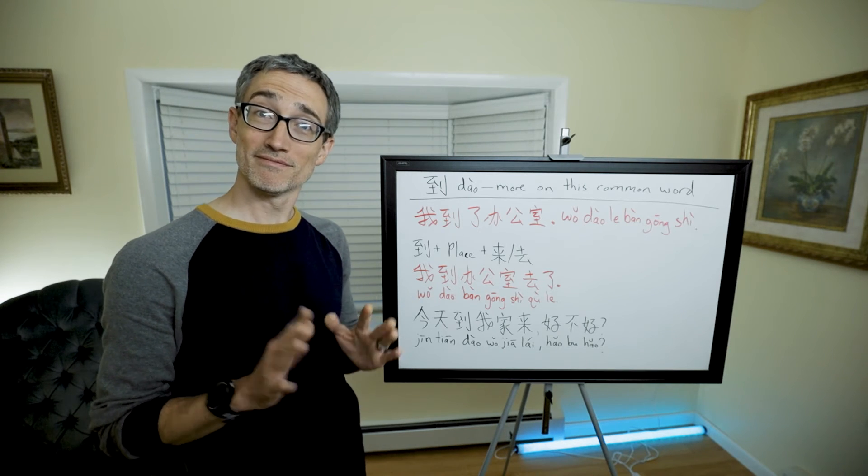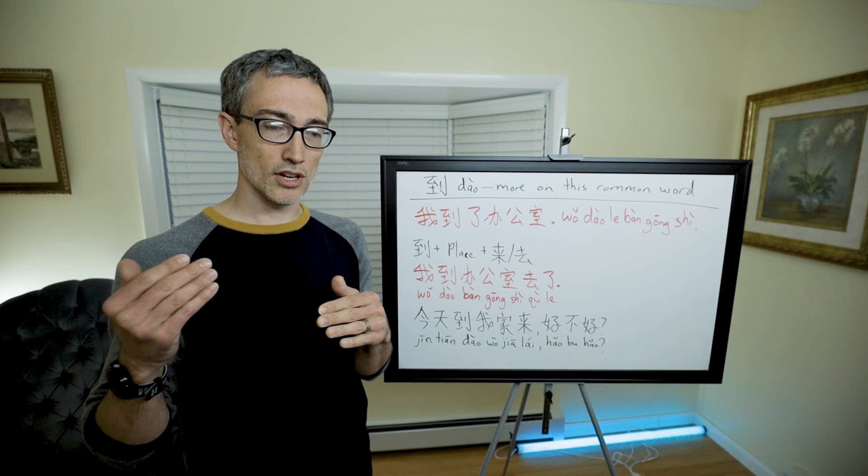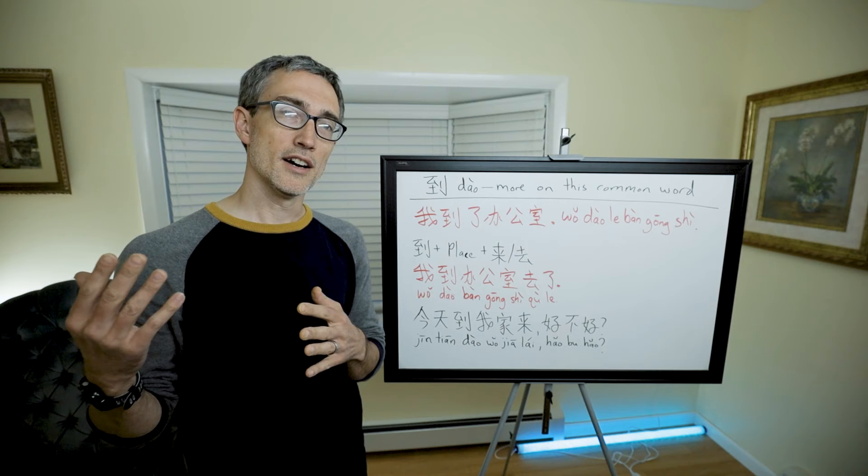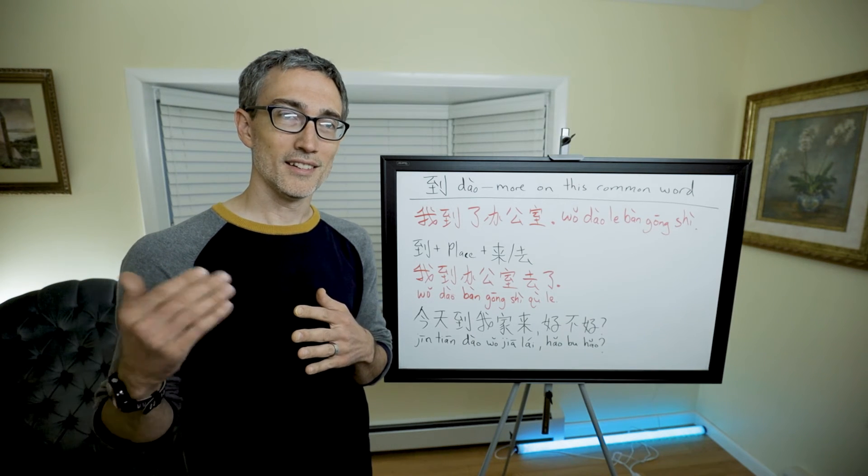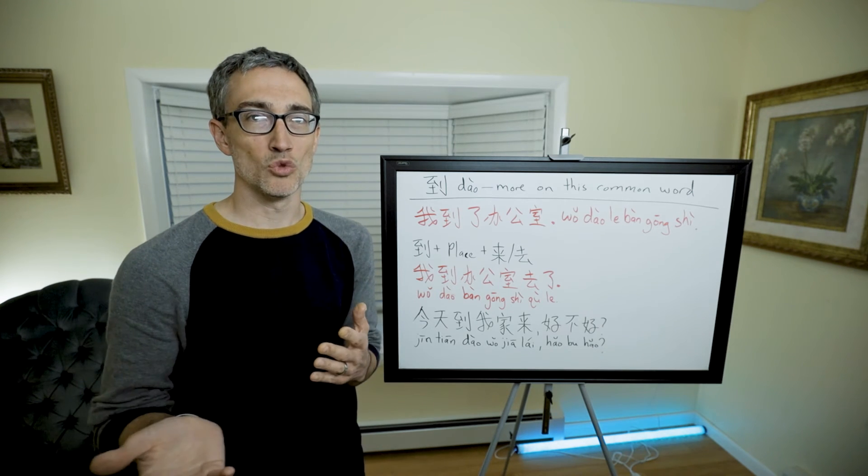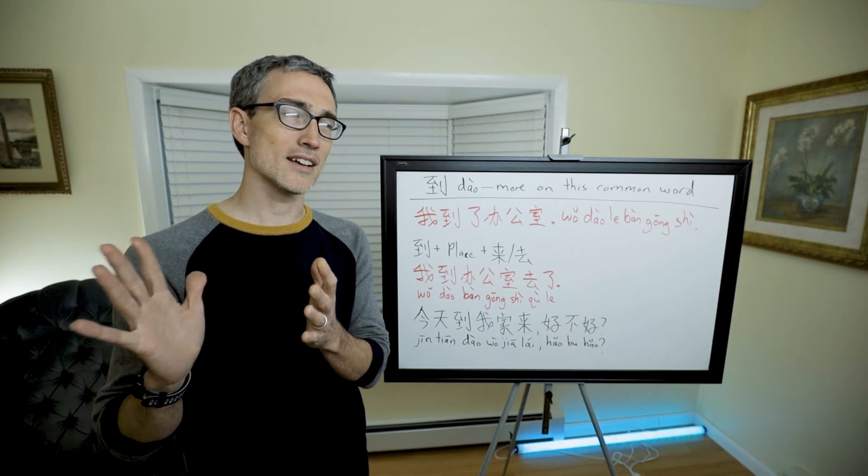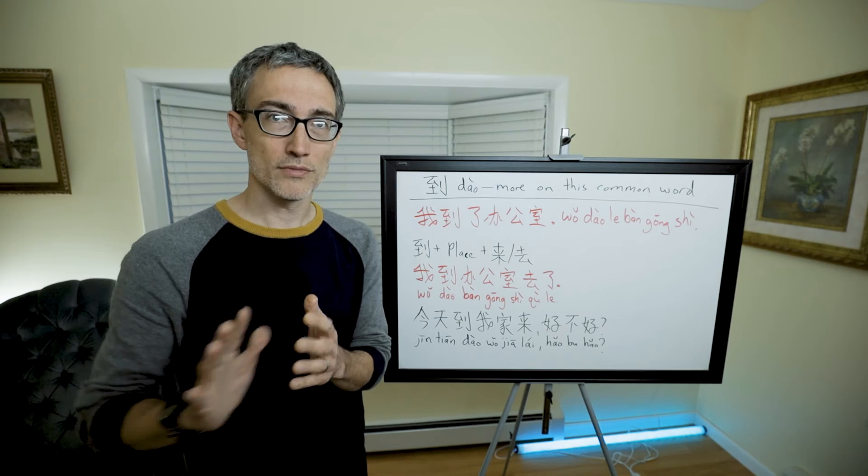That's the basic meaning to arrive, but sometimes it means to go. For example, imagine this scenario: you're on a train sitting next to somebody and you say 你到哪里. That does not mean you have arrived to where, it means where are you going. So sometimes in certain contexts it can mean where are you headed.